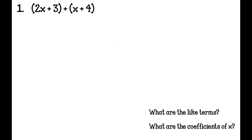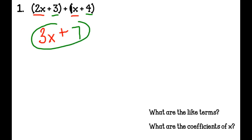Now we're going to go ahead and add our algebraic expressions. Number 1: 2x + 3 + x + 4. The first thing we do is ask, what are our like terms? Our like terms are 2x and x, and another set of like terms is 3 and 4. The coefficients of x are 2 and 1. So 2x + 1x = 3x, and 3 + 4 = 7. Now 3x and 7 cannot be added together, so I circle it — that is my answer.